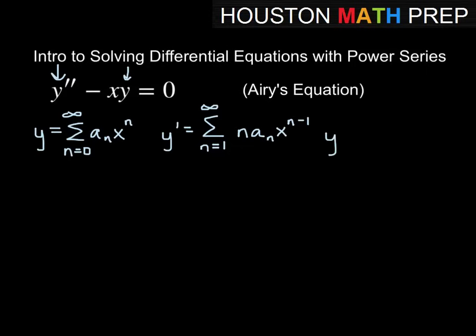Going a step further to y double prime, we'll have to start at n equals 2 to infinity. We keep n, the n minus 1 comes out front, we get a sub n, and then x to the n minus 2 when we differentiate a second time.